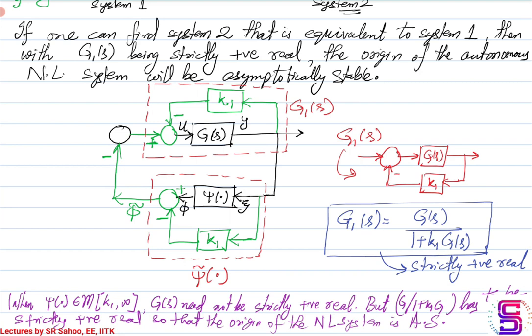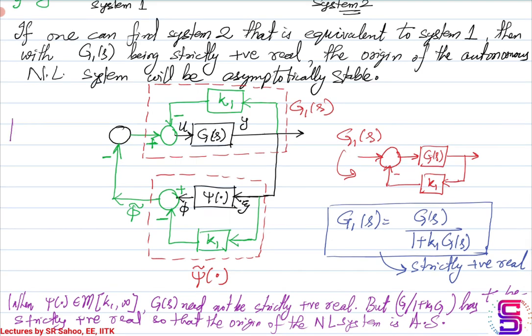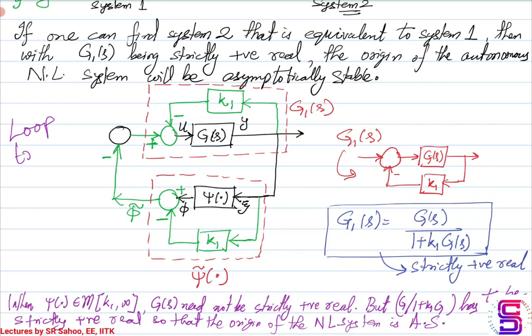All the actions taken to generate the equivalent system — where G1(s) and psi-tilde are involved in the feedback interconnection — is termed the loop transformation, because you transform the entire feedback loop.